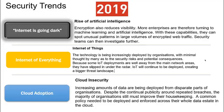The second trend is the Internet of Things — a massive area of growth in both consumer and enterprise verticals. Technology has been increasingly deployed by organizations, but minimal thought is sometimes given to security risk. There's a lot of legacy IoT infrastructure out there, and some of these deployments are well away from main network areas, potentially slipping under the radar. IoT will continue to grow as a threat landscape.